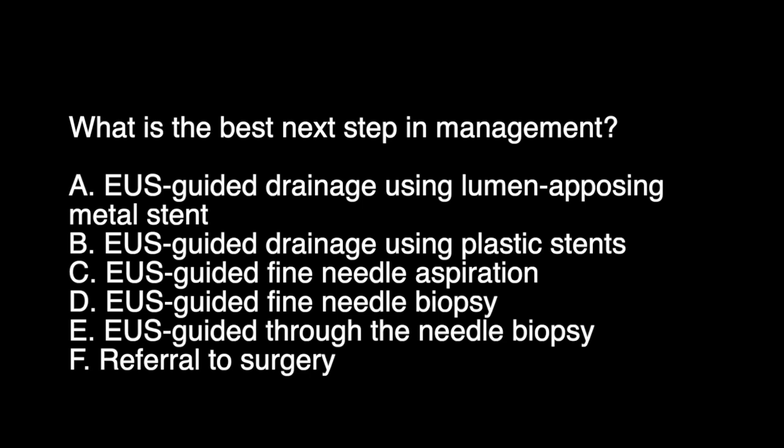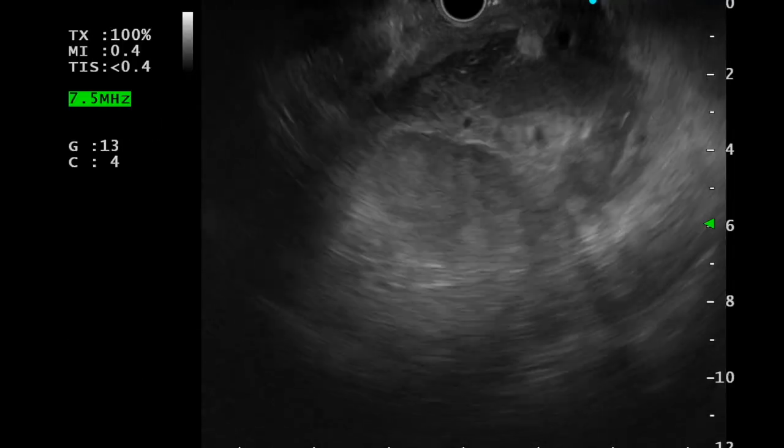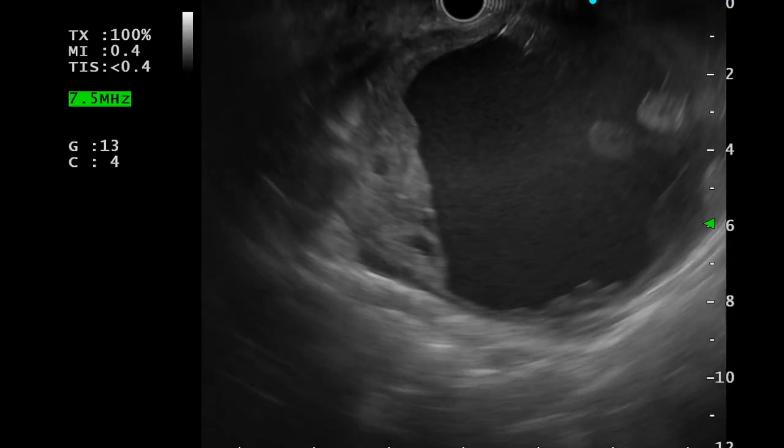A. EUS-guided drainage using lumen-apposing metal stent. B. EUS-guided drainage using plastic stents. C. EUS-guided fine needle aspiration. D. EUS-guided fine needle biopsy. E. EUS-guided through-the-needle biopsy. F. Referral to surgery. Due to the presence of a focally thickened cystic wall,